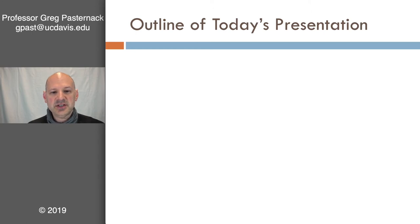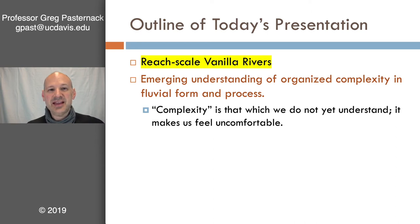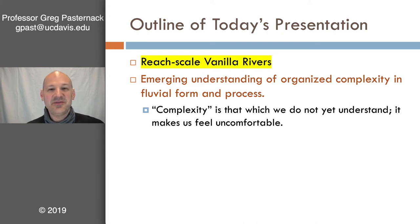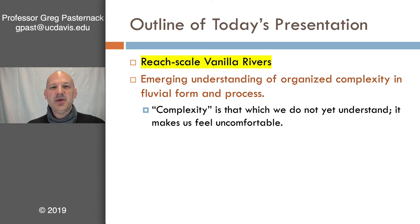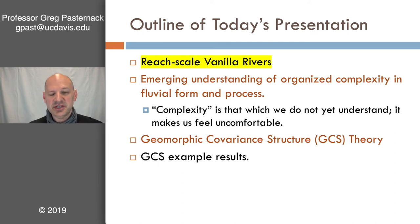Let's go through an outline of today's presentation. First, I'm going to talk about what I call reach-scale vanilla rivers. Then I'll talk about the modern developments in the 21st century about our emerging understanding of organized complexity in fluvial form and processes. It's important to appreciate that complexity just means that which we have yet to understand. Then I'm going to use modern methods to introduce and explain the theory of geomorphic covariance structures. Finally, I'll show some example results from a pair of articles we published in 2018.